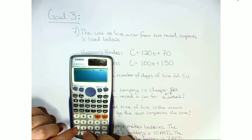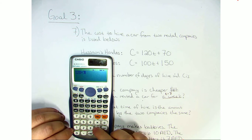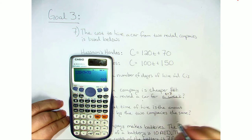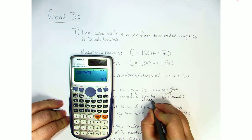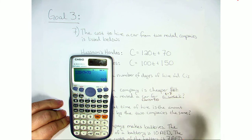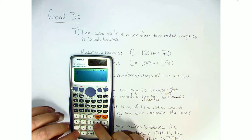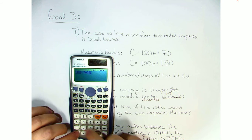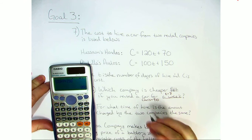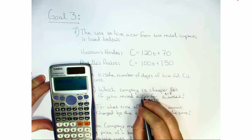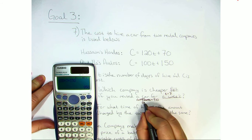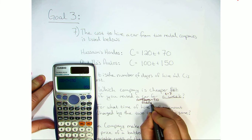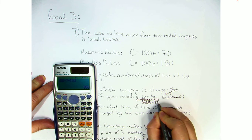So we do 120 times seven plus 70, and we get that Hussein's is 910 dirhams. Next, 100 times seven plus 150, and we get Abdullah is 850 dirhams.